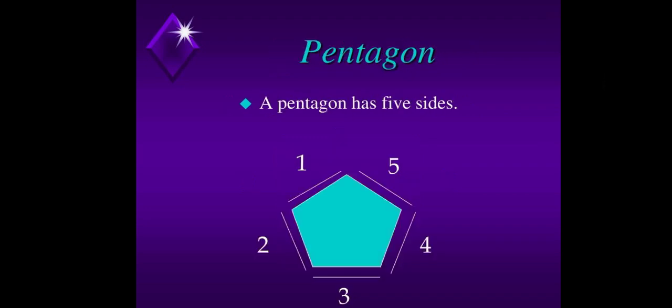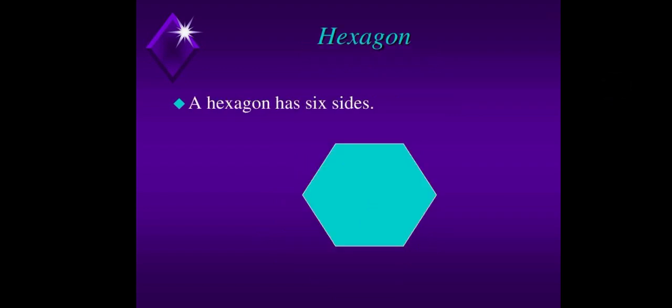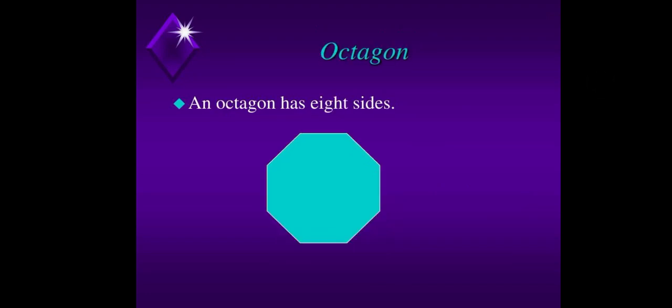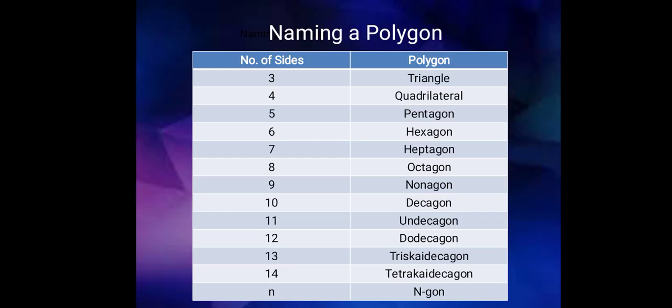Next, the pentagon, which has five sides. Hexagon, it has six sides. Then a heptagon, it has seven sides. Octagon, it has eight sides.